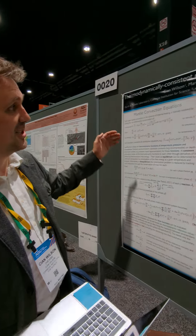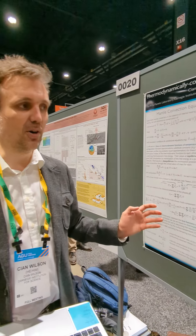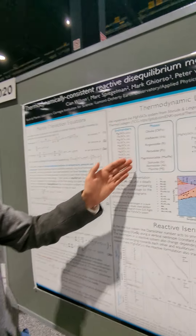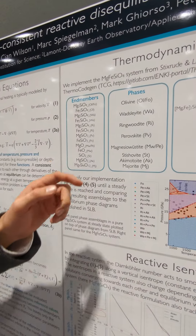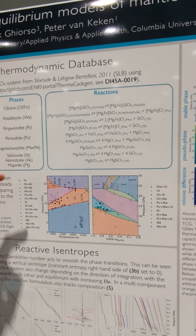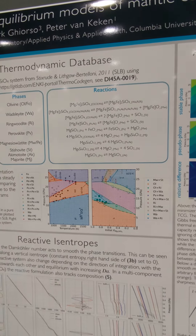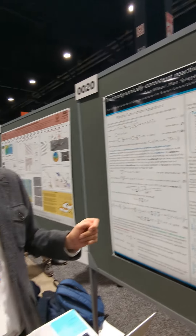That basically means that we're expanding our system of equations to also track compositions throughout the mantle. We're starting out by benchmarking that on relatively simple compositions with a limited number of phases and a limited number of reactions between those phases, and then we can run simulations that include those phases and the reactions between them.